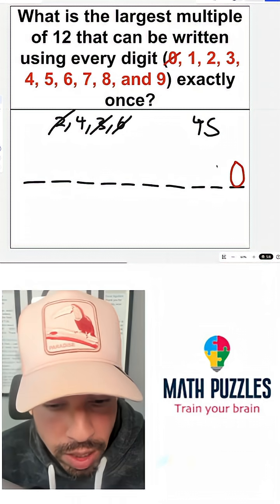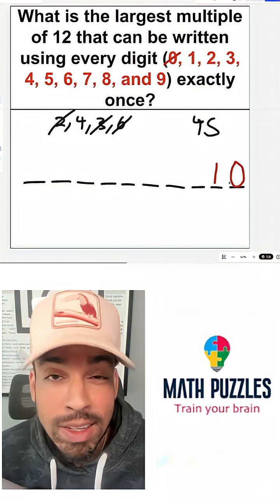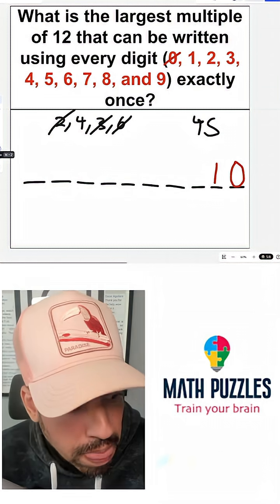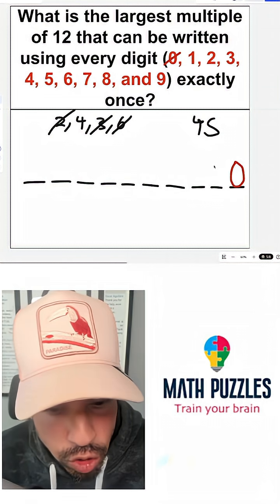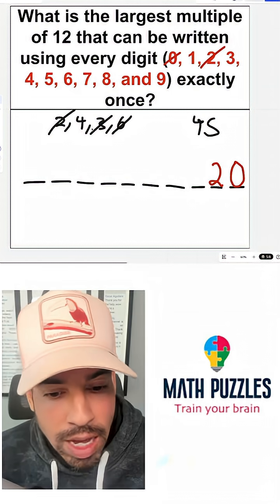Now of course it'd be great if I could put a 1 here, right, and just have a 10 there, put the two smallest numbers there and we're good to go. But the problem is 10 is of course not divisible by 4, but 20 is. So I'm going to put 2 and 0 right there.